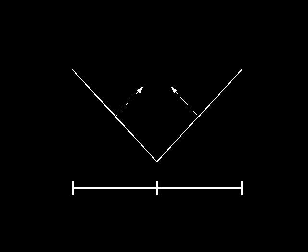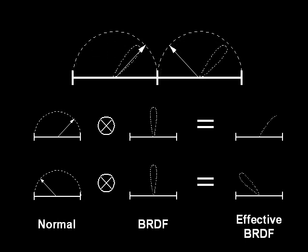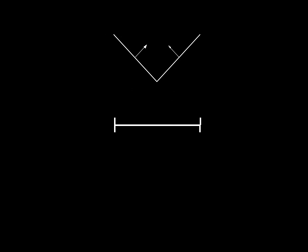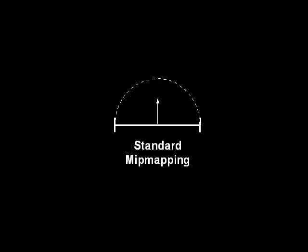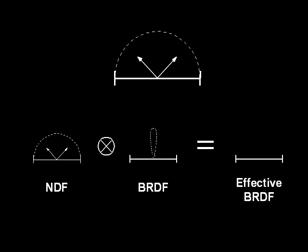Our method is based on a theory of normal map filtering as convolution. Here we see a v-groove structure encompassing two pixels. Each pixel has a single normal which we convolve with the BRDF of the surface to obtain an effective BRDF. As we zoom out, a single pixel now encompasses two different surface normals and filtering is required. Standard bitmapping simply averages these two normals, leading to a darker, incorrect result. In this paper, we preserve the normal distribution function, showing that it can be convolved with the BRDF to get accurate results.